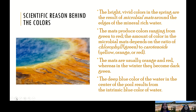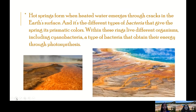The bright vivid colors in the spring are the result of microbial mats along the edges of the mineral-rich water. The mats produce colors ranging from green to red. The amount of color in the microbial mats depends on the ratio of chlorophyll, which is the green pigment, to carotenoids, which are the yellow, orange or reddish pigment. The mats are usually orange and red, whereas in winter they become dark green. The deep blue color of the water in the center results from the intrinsic blue color of water. Hot springs form when heated water emerges through cracks in the earth's surface, and it is different types of bacteria that give the spring its prismatic colors. Within these rings live different organisms including cyanobacteria, a type of bacteria that obtain their energy through photosynthesis.